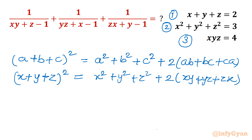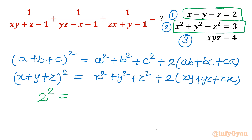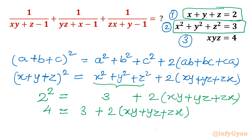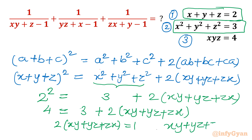Substituting equation 1, the left side is 2 squared equals 4. From equation 2, x squared plus y squared plus z squared equals 3. So 4 equals 3 plus 2 times (xy plus yz plus zx), giving 2 times (xy plus yz plus zx) equals 1. Dividing both sides by 2, we get xy plus yz plus zx equals one half. This result will be used later.